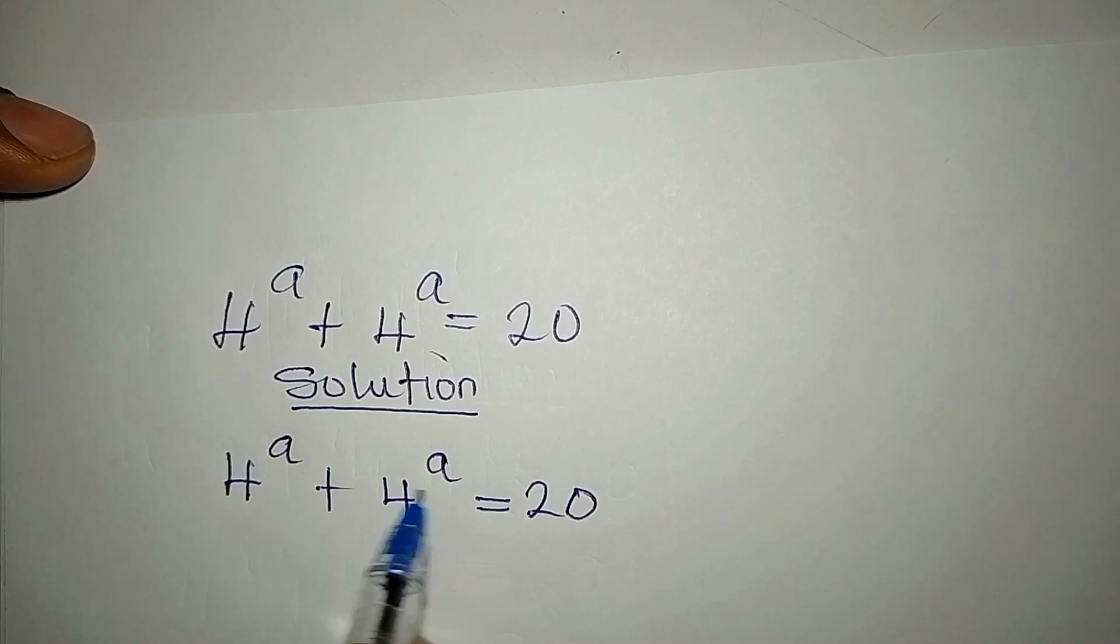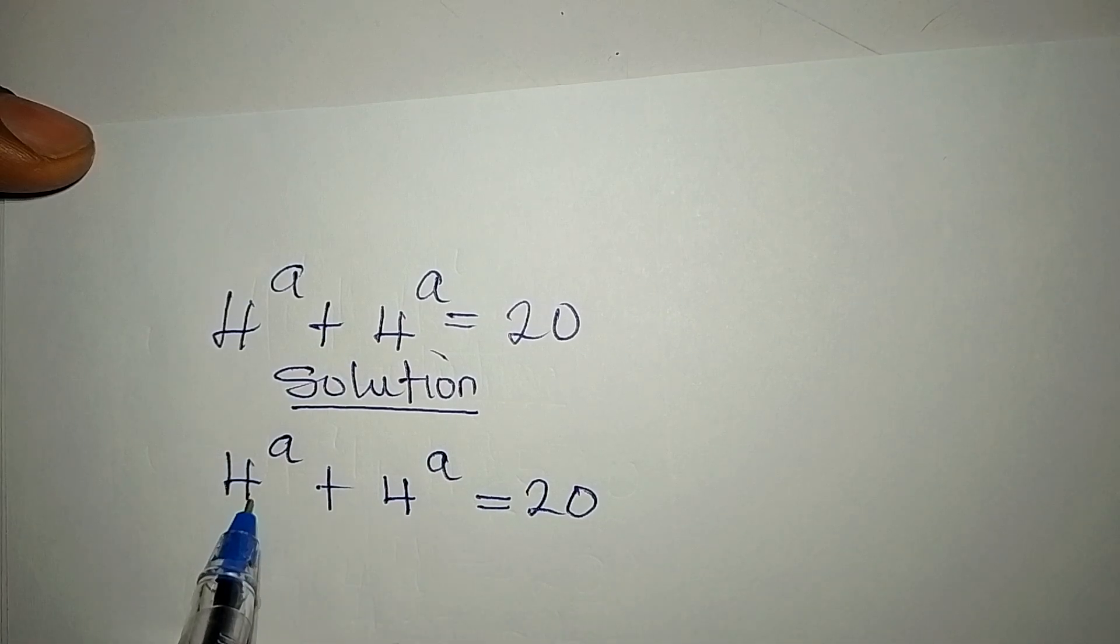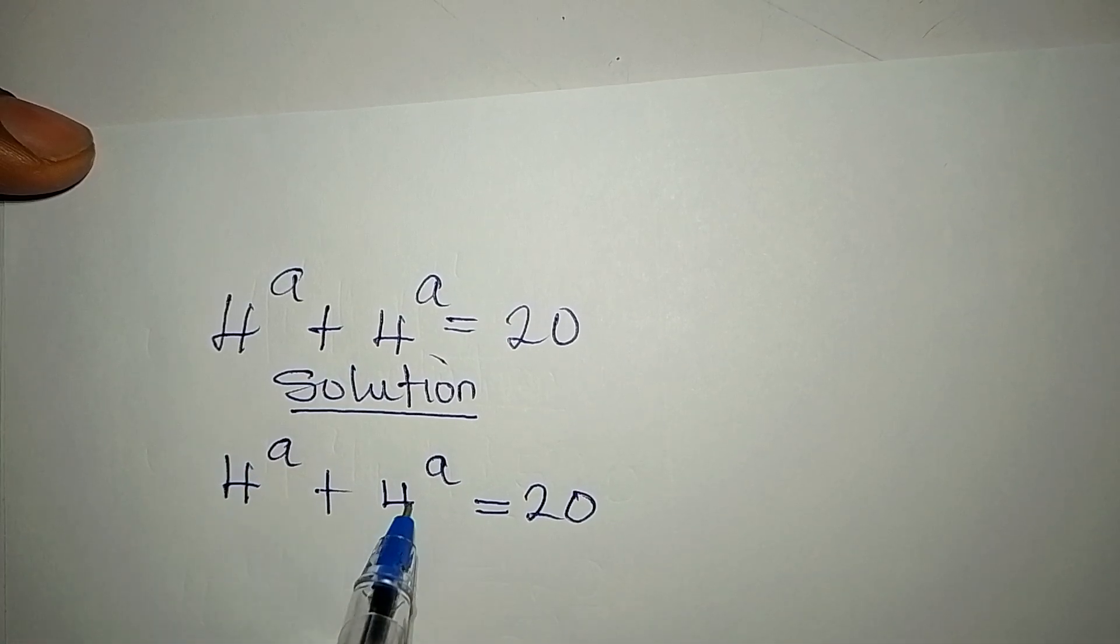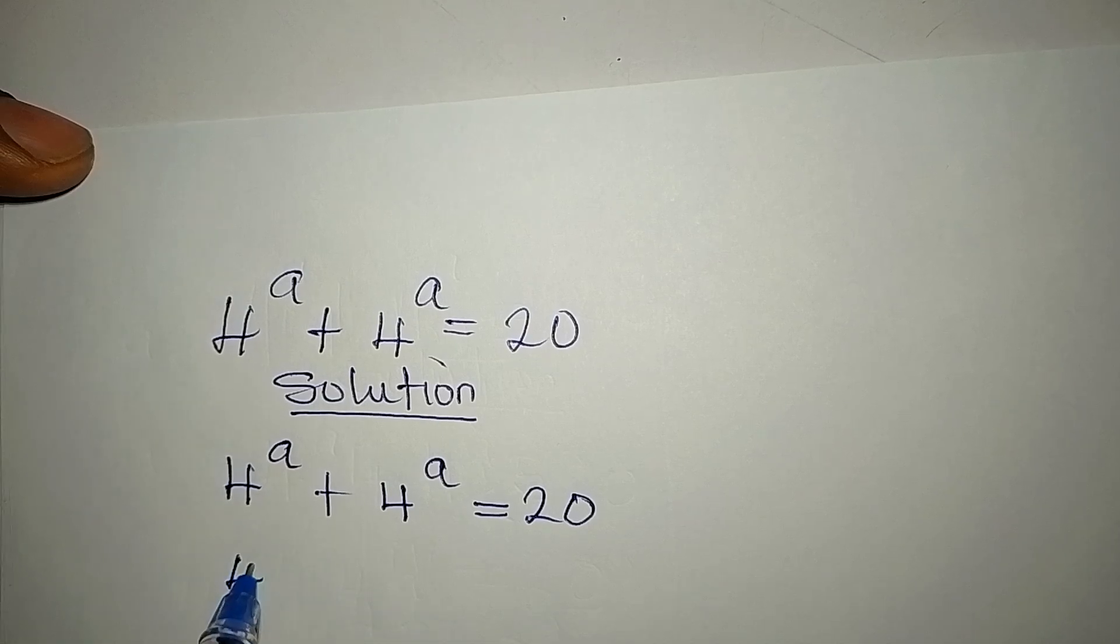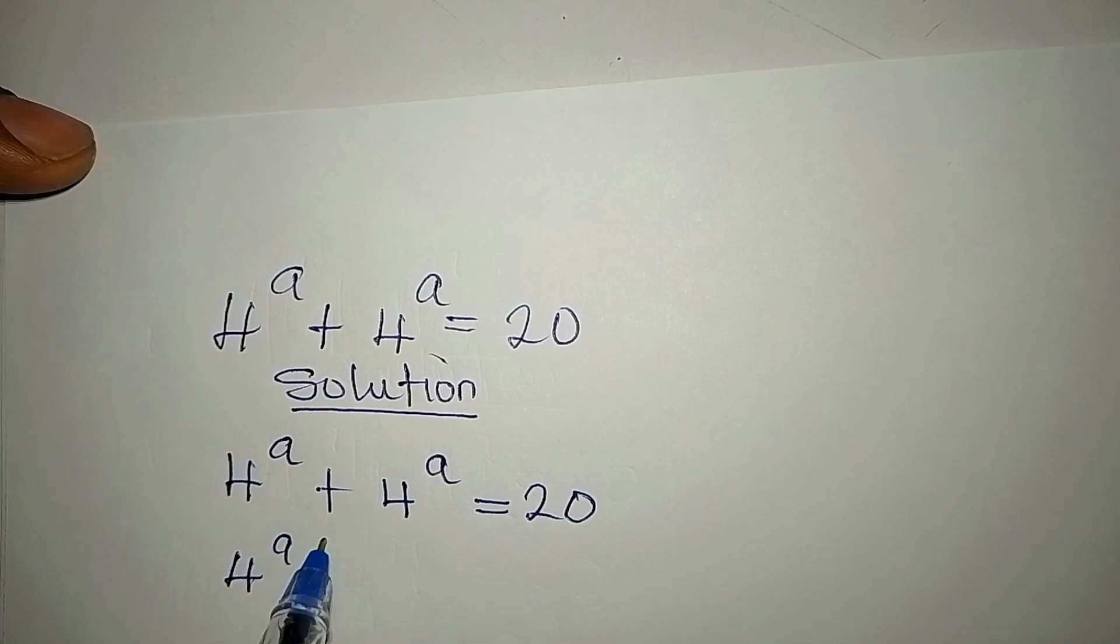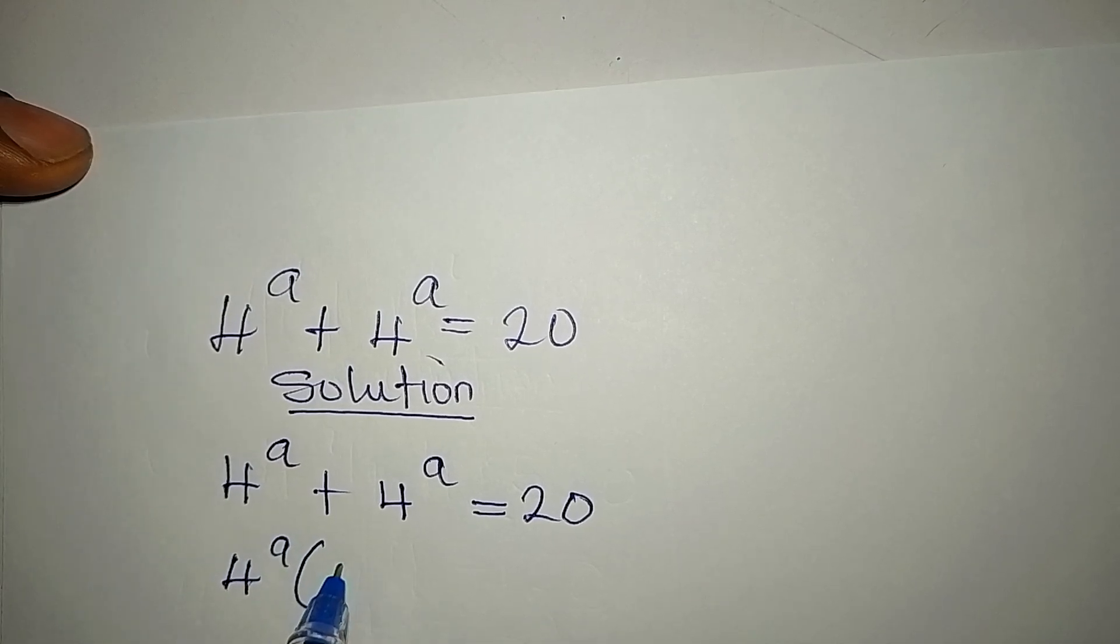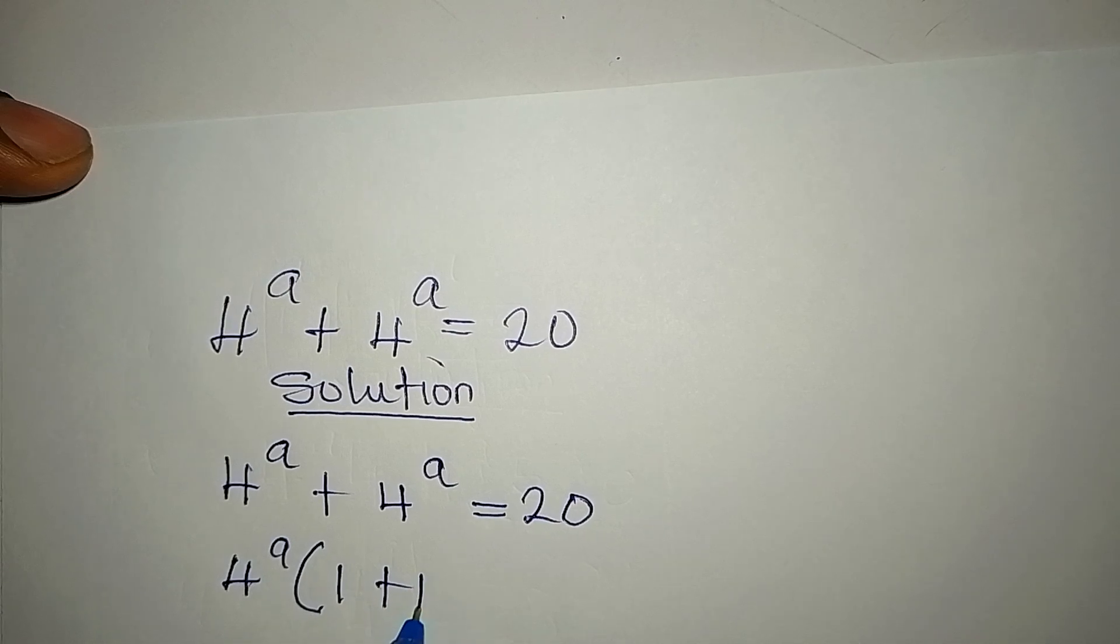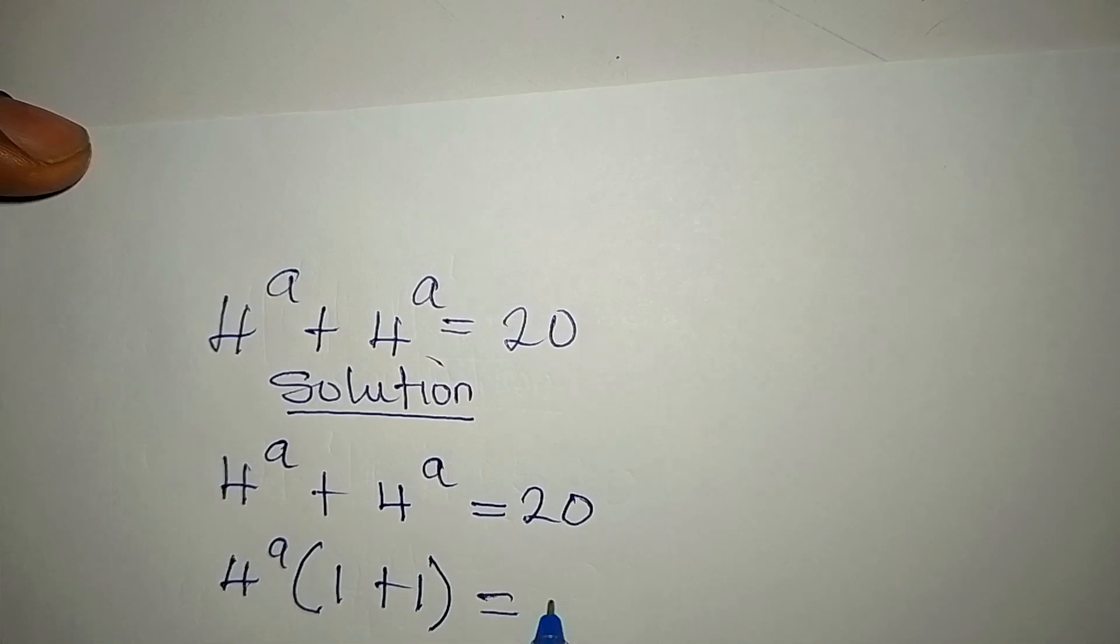But then we can add this. Mind you, we have 4 to the power of a in these two places. So you can factorize 4 to the power of a. Then you have 1 plus 1, and this is equal to 20.